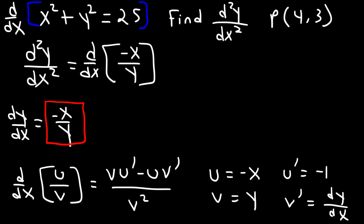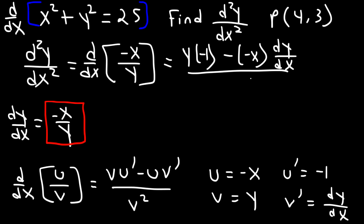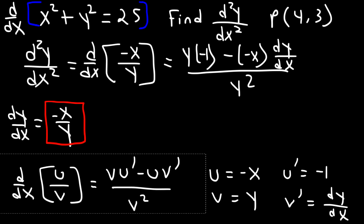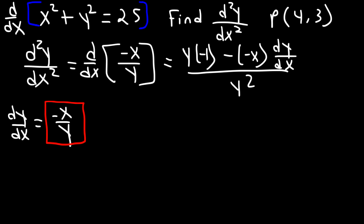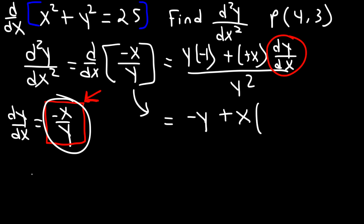Using the quotient rule formula: v times u prime gives us y times negative 1, minus u times v prime gives us negative x times dy over dx, all over v squared, which is y squared. Now we replace dy dx with negative x over y. This expression becomes negative y, and the two negatives cancel, giving positive x times negative x over y, all divided by y squared.